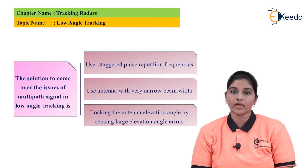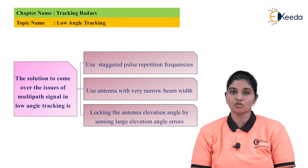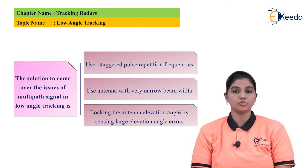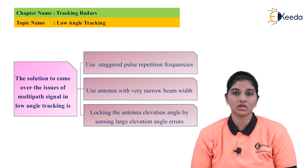In summary, low angle tracking causes the radar to receive two reflections — one from the earth's surface and one direct — resulting in angular measurement error. To avoid this, techniques used include frequency diversity, narrow beam antenna, and off-axis tracking. I hope you understood this topic. Thank you very much for watching. Stay tuned and subscribe.